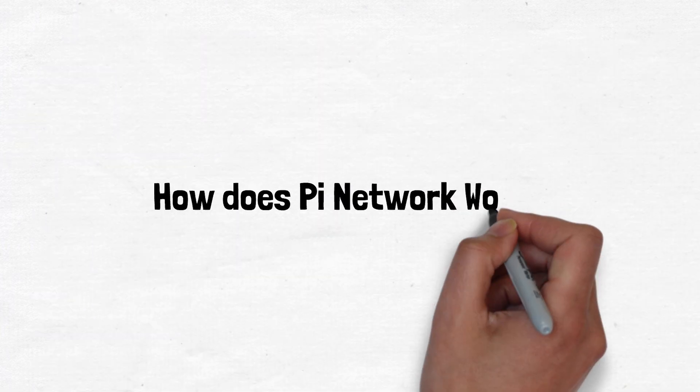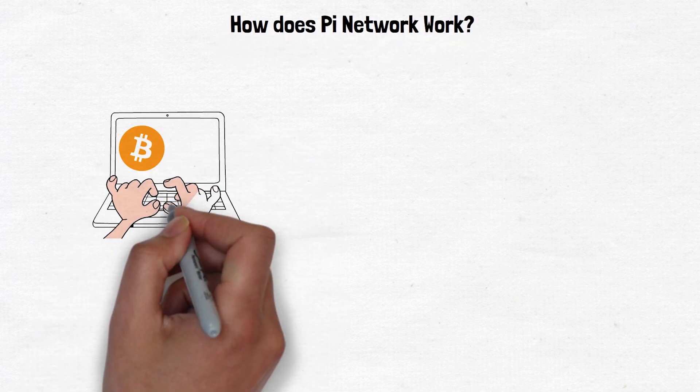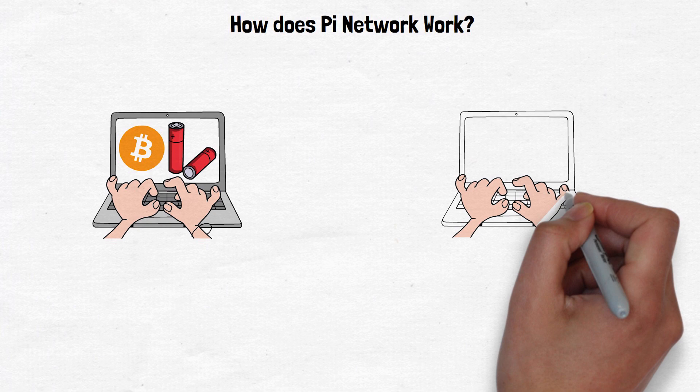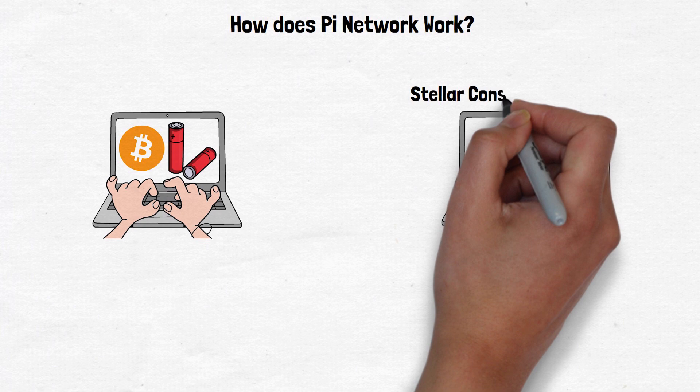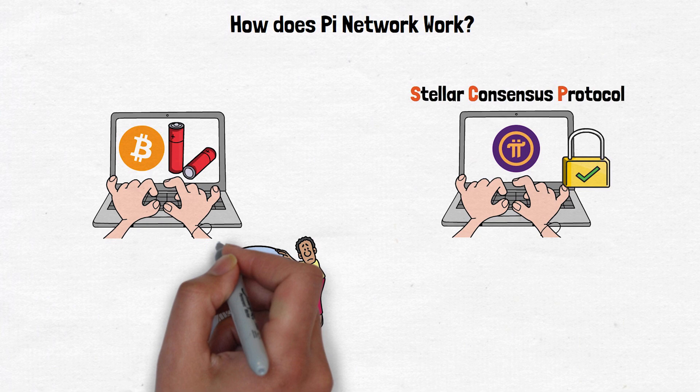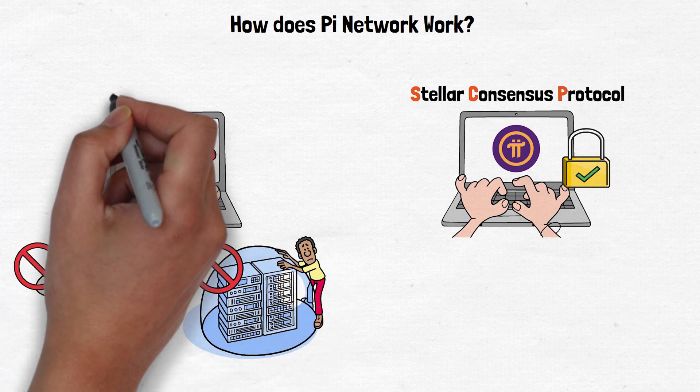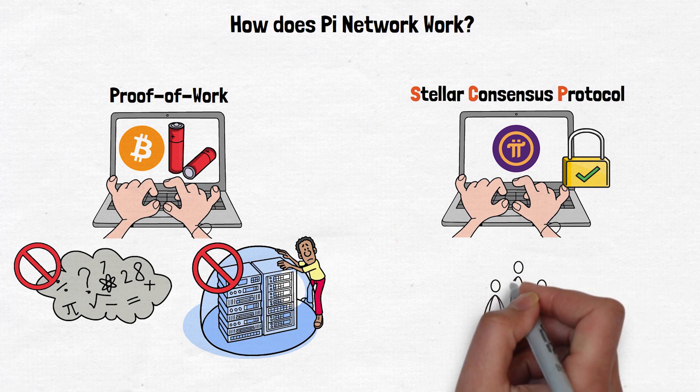But how does Pi Network really work? Unlike Bitcoin's energy-intensive mining process, Pi Network uses a different method for validating transactions and securing the network. This method is known as the Stellar Consensus Protocol, or SCP for short. Here's how it works. Instead of relying on massive data centers or solving complex puzzles like under Bitcoin's proof-of-work consensus mechanism, Pi's system is built around something called security circles.